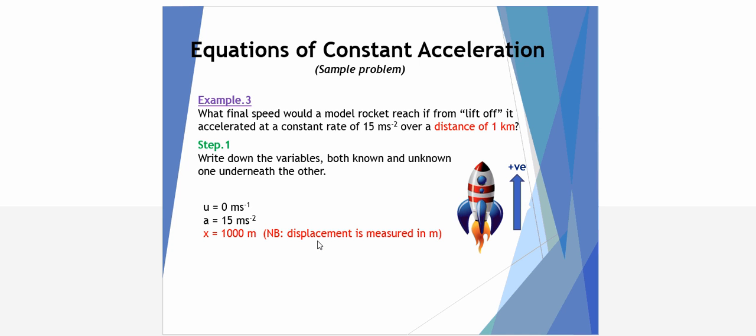X displacement is 1 kilometre. We must, as stated earlier, use SI units. The distance SI unit is metre. So, our 1 kilometre is entered in as 1,000 metres. If we left it as 1, the equation will work as though it's 1 metre and give us an incorrect answer. Finally, what final speed? V equals question mark.